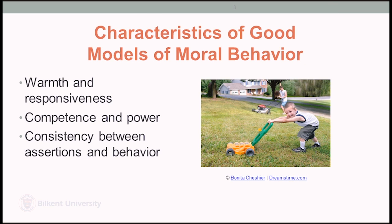What is a helpful model? Good models are warm and responsive — not people the children are unfamiliar with, but people they have good bonds with and want to imitate and learn from. They show competence and power, and they have consistency between what they say and what they do. So if they are going to teach their children not to throw litter on the ground, they won't engage in that behavior themselves either.